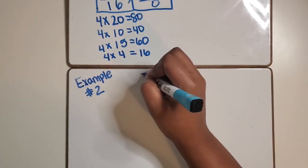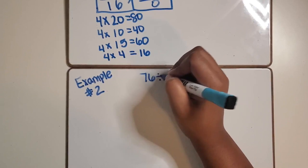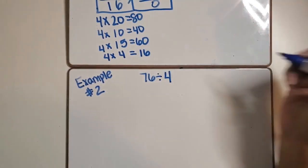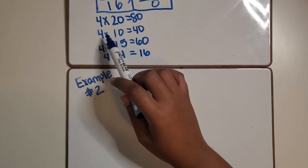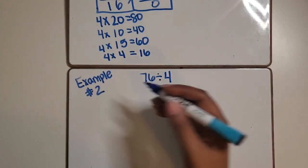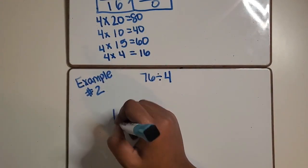What if a student didn't know right away that four times 15 equals 60? What if they were mainly comfortable with four times 10 equals 40?